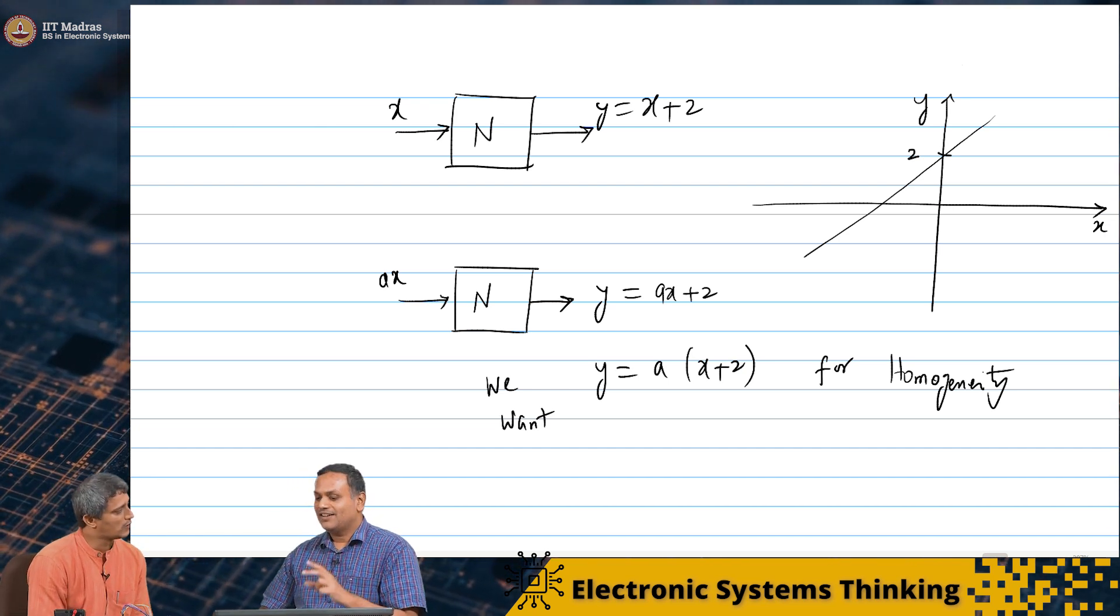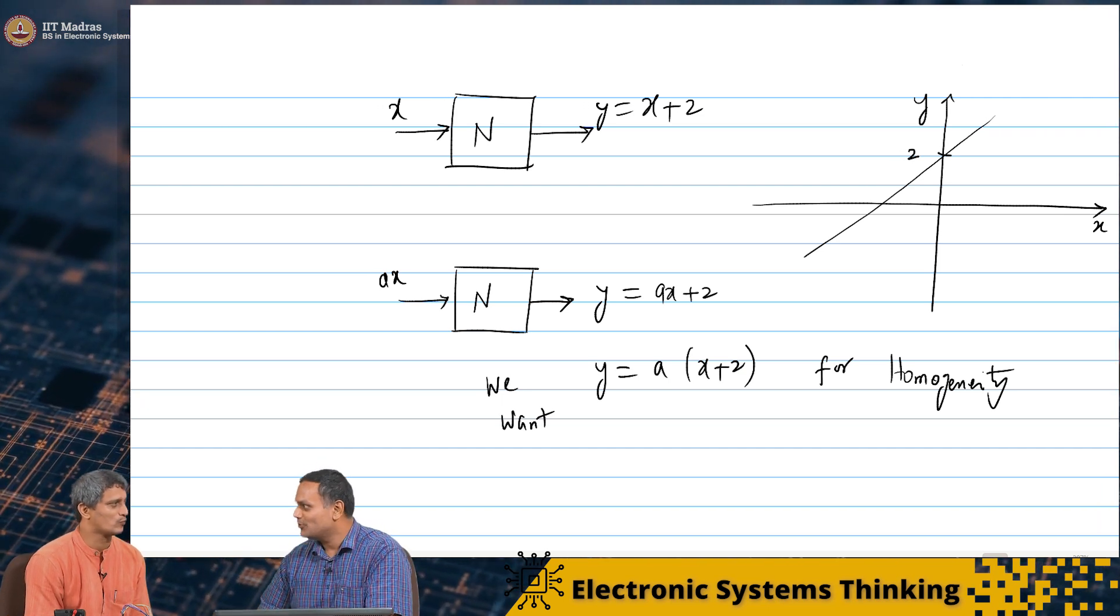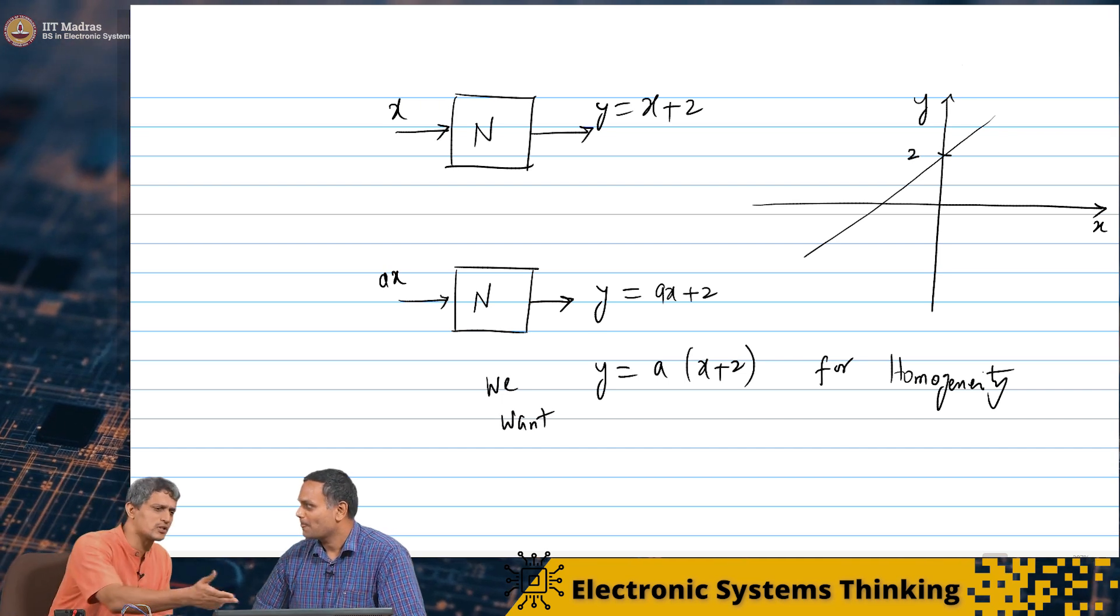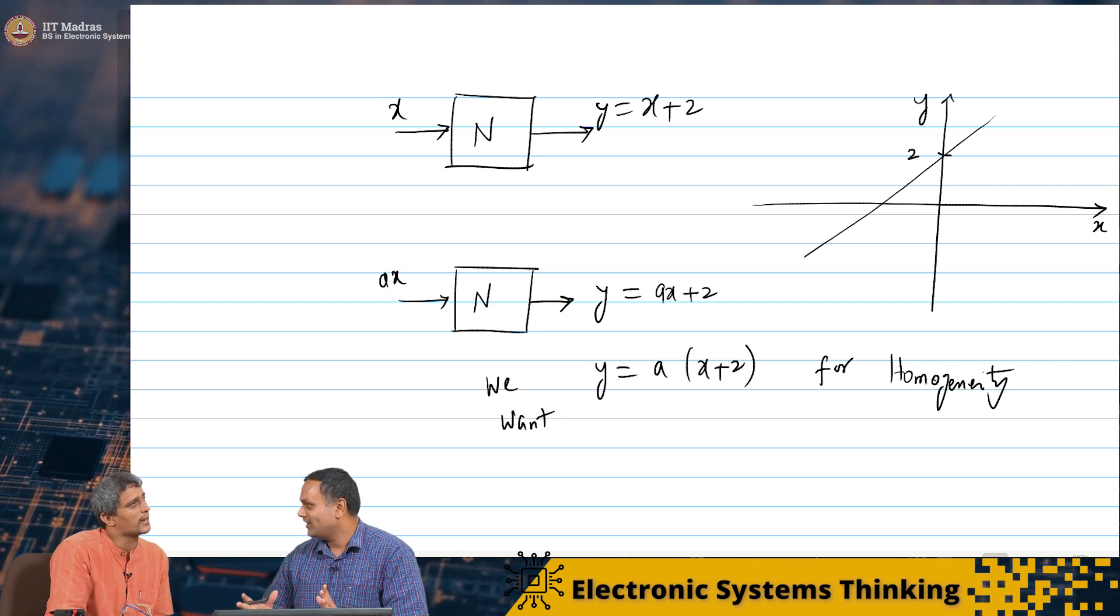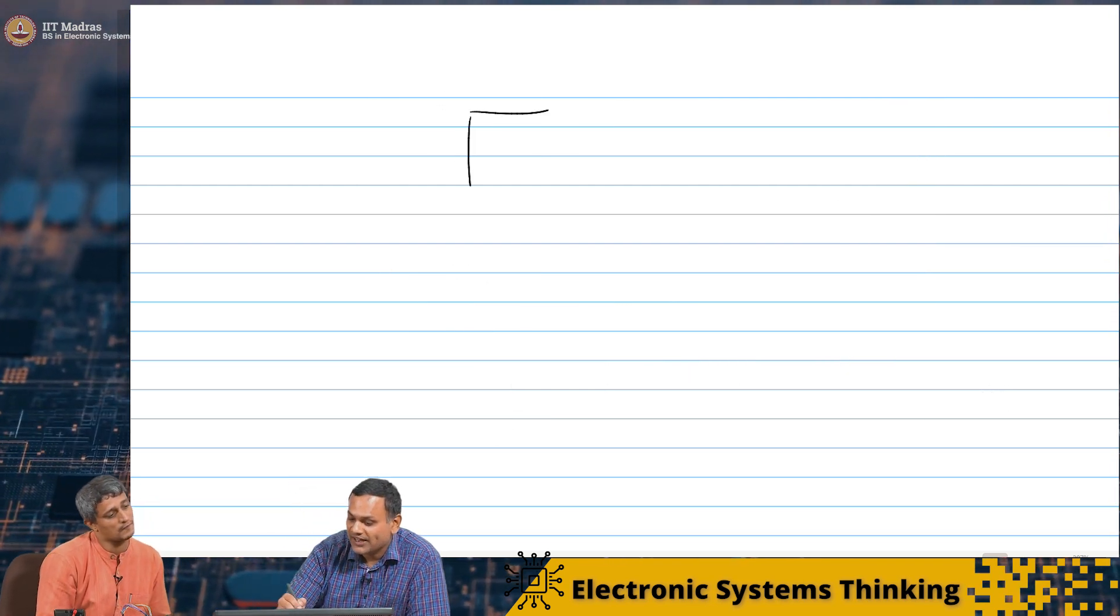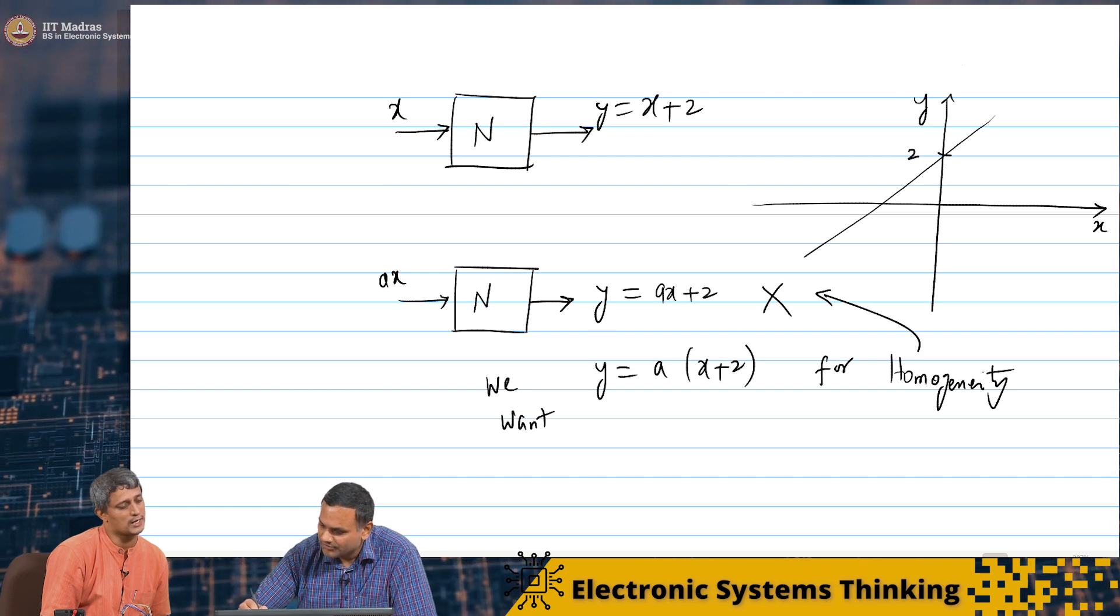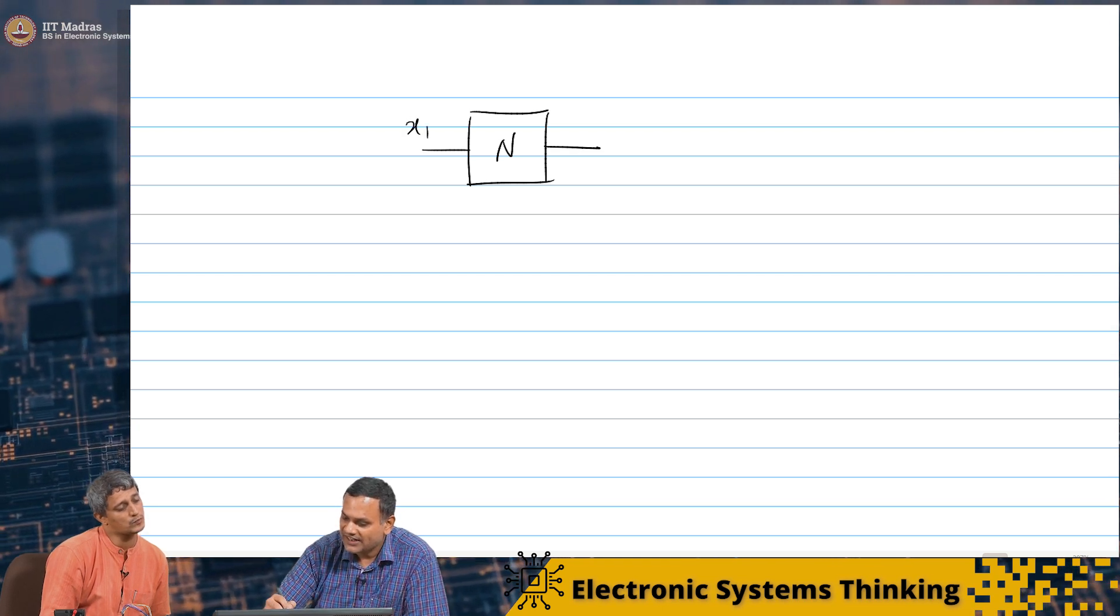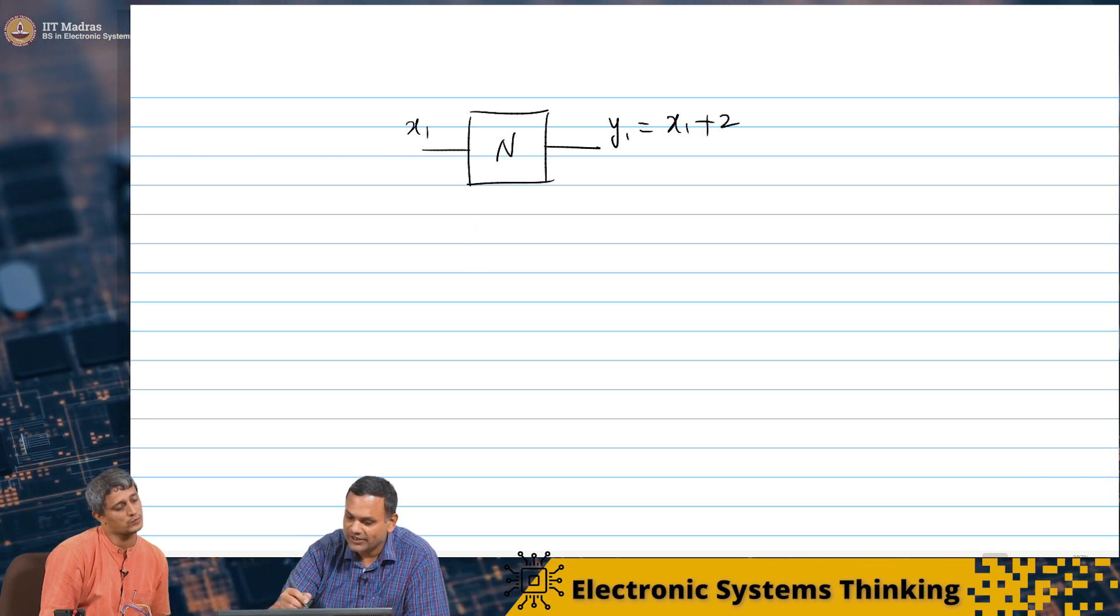So now you can see the requirement is an if and only if condition. So it is linear only if it satisfies both homogeneity and additivity. Okay. I get your point. So actually this equation x plus 2 will not even follow additivity. It won't even follow additivity. If I give x1, I will get x1 plus 2, x2, x2 plus 2. If I add, I will get x1 plus x2 plus 4. Let's confirm that. So I have, I take this network N. So we will point out that this does not follow homogeneity. So let us try additive principle.